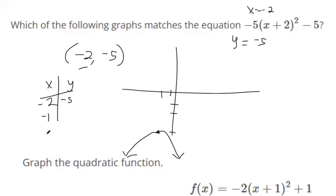If you plug in negative one or if you plug in negative three, one on either side. If you plug in negative one over here, you get one. One squared is one. One times negative five is negative five. Negative five minus five is negative ten.